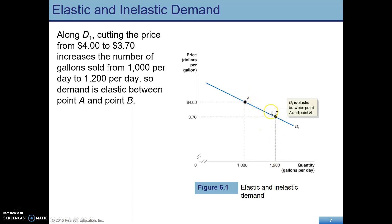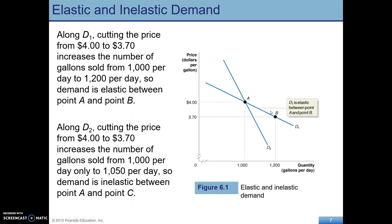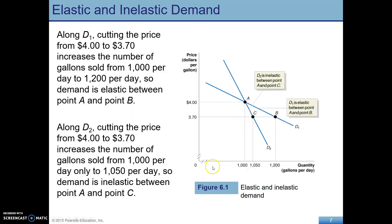This would be elastic, versus the other demand curve going from A to C, which is going to be inelastic. Remember, elasticity — you want to think responsive to a change in price. This change in price results in a large change in quantity demanded for the first demand curve, and then the same change in price results in a smaller change in quantity demanded for the second demand curve. So this one is going to be inelastic, and you can calculate that out and see the numbers for yourself.